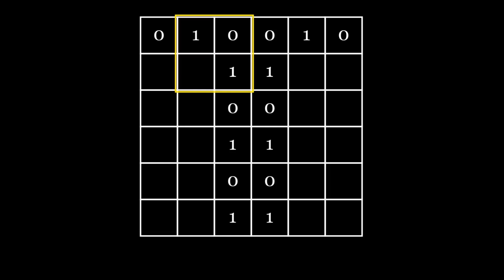Now, consider this 2 cross 2 subgrid. Three values are already fixed, so the fourth value is also determined. By the same logic, the entire grid gets fixed once we fill the first row. However, this holds true only if the first row is not alternating.